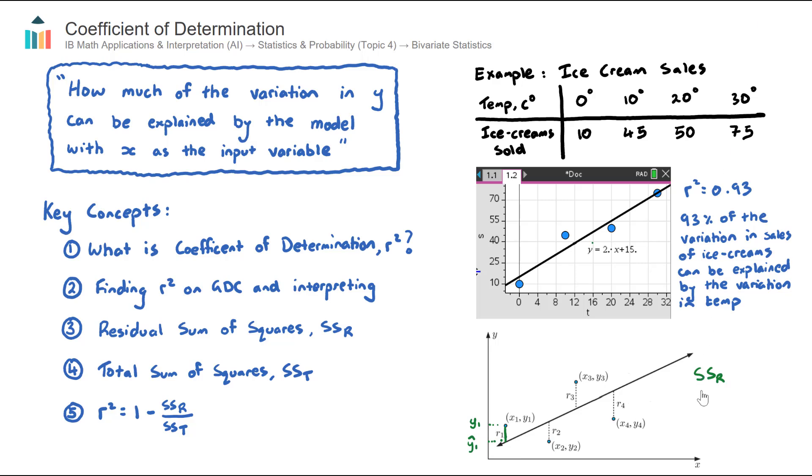Now, if the SSR is zero, that would mean that all the data points lie perfectly on the line, and therefore the line of best fit perfectly represents the data. But if the SSR is not zero, and it's some number, the question therefore is, what does that number mean? It might be, say, 0.5, it could be 1, it could be 4.